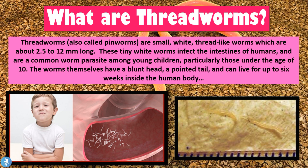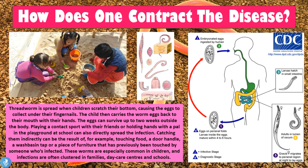Now that we know the basics of the threadworm infection, let's take a closer look at how this disease can be spread. Threadworms are spread when children scratch their bottom, causing the eggs to collect under their fingernails. The child then carries the worm back to their mouth with their hands, and the eggs can survive up to two weeks outside the body. Playing a contact sport or holding hands with a friend at school can also directly spread the infection.